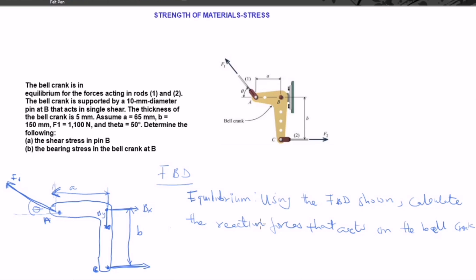For continuation of strength of materials, still under stress, we are going to take another example and go through it for proper understanding. In this example, the bell crank is in equilibrium. We need to find the forces acting in rod one and rod two — here is rod one and here is rod two.